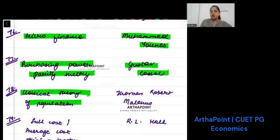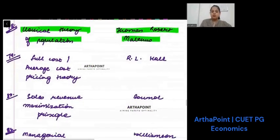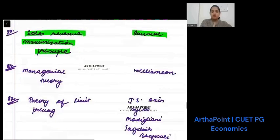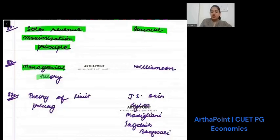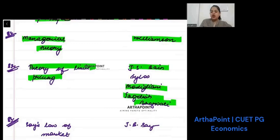Classical theory of population is given by Thomas Robert Malthus, or simply Malthus. Full cost or average cost pricing theory is given by R.L. Hall. Sales revenue maximization principle is given by Baumol. Managerial theory is given by Williamson. Theory of limit pricing is given by J.S. Bain, Modigliani, Jagdish Bhagwati and Sylos.